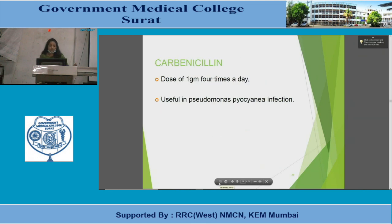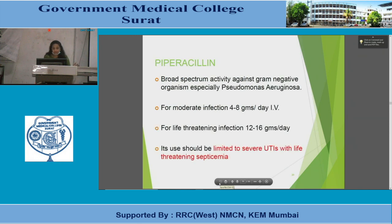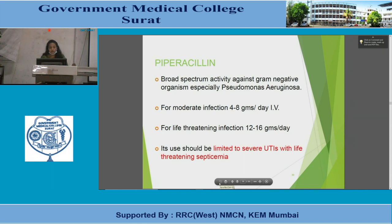Carbenicillin at 1 gram four times a day is useful for Pseudomonas infections. Piperacillin has broad-spectrum activity against gram-negative organisms, especially Pseudomonas, useful for moderate infections at 4–8 grams per day intravenously. For life-threatening infections the dose is 12–16 grams per day; its use should be limited to severe cases with life-threatening septicemia and is considered a reserved drug.